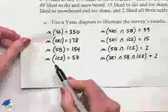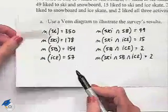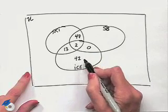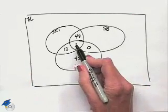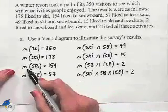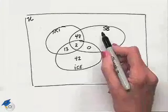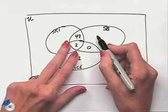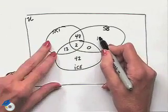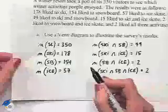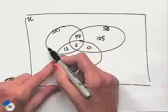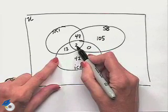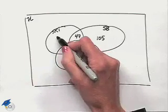Now we fill in the individual circle regions. For ice skating, we had 57 total; with 15 already accounted for in that circle, that leaves 42 for the remaining region. For snowboarding, we had 154; with 47 plus 2 equaling 49 already accounted for, 154 minus 49 gives us 105. For skiing, we had 178; adding 47 plus 13 gives 60, plus 2 is 62. Subtracting 62 from 178 gives us 116.